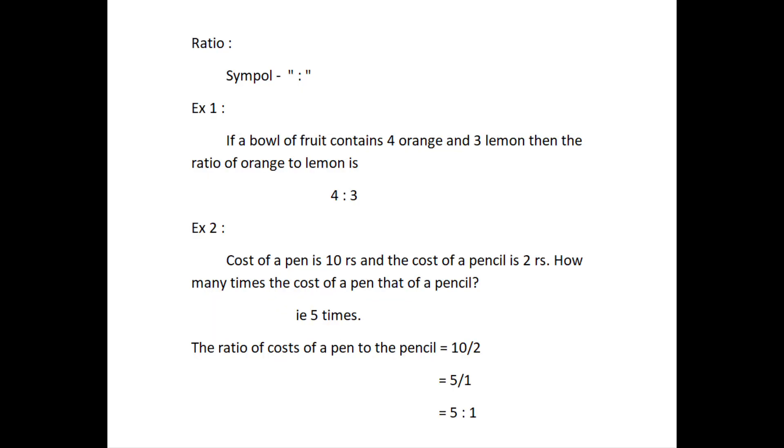A ratio is a relationship between two numbers indicating how many times the first number contains the second. For example, if a bowl of fruit contains 4 orange and 3 lemon, then the ratio of oranges to lemon is 4 is to 3.